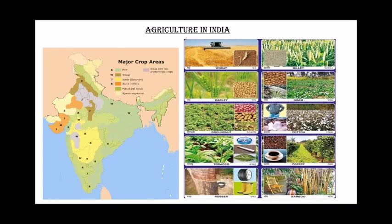Hello children, today we will continue with the eighth lesson: Economy and Occupation. In the last video we saw the economy and performances in both countries, as well as agriculture, fishing, and mining in Brazil. Now we will be doing agriculture practiced in India — the different products that are produced there. Unlike Brazil, India contributes more towards GDP from agriculture.